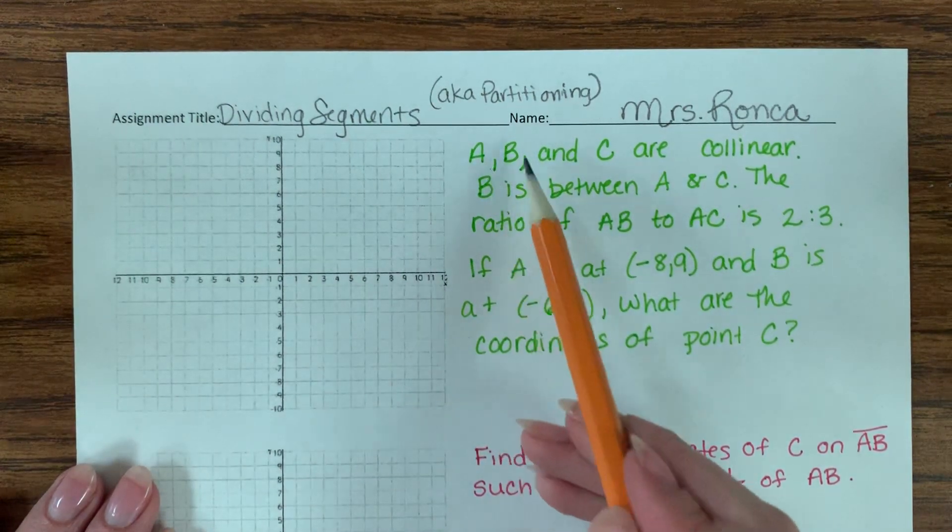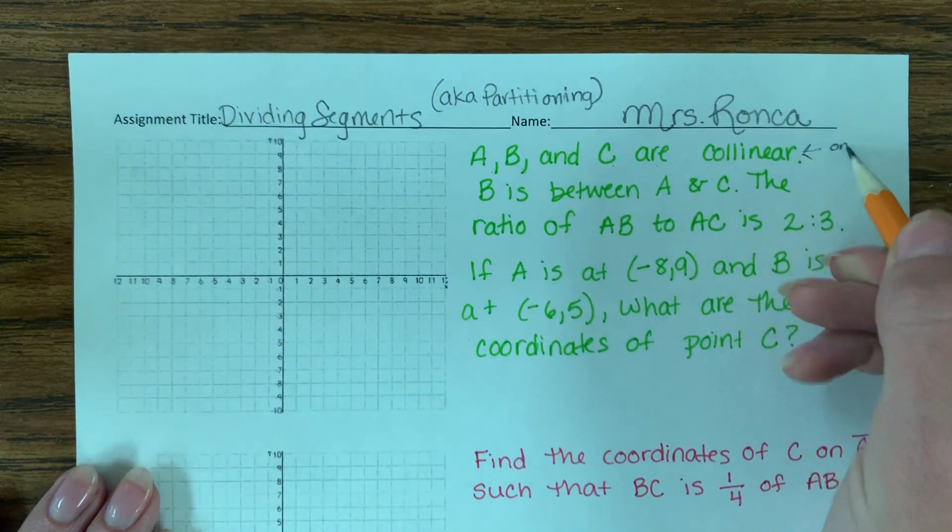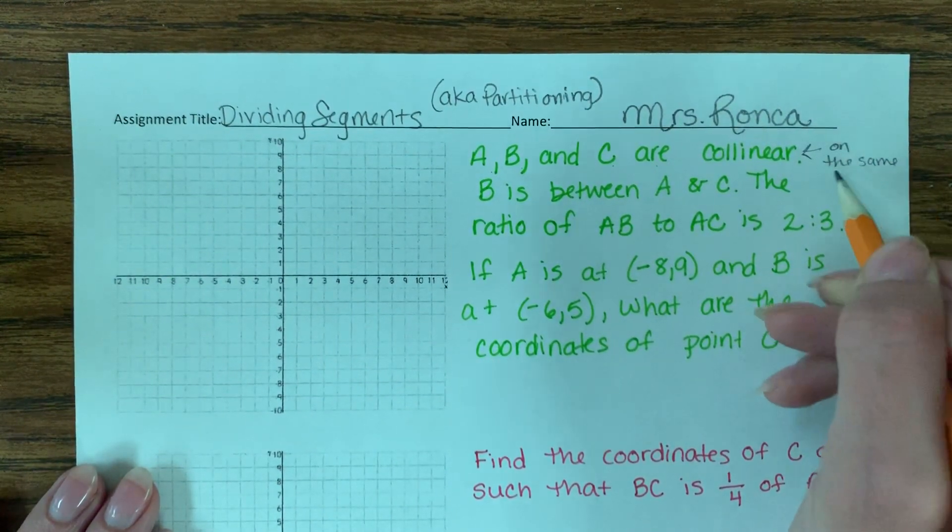In this example, they tell me that A, B, and C are collinear, which means on the same line.